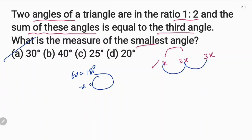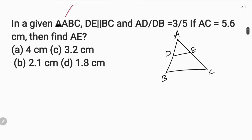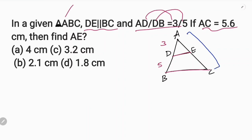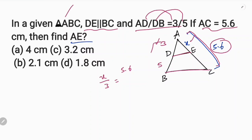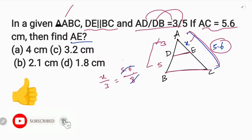Let's take this triangle. This triangle has DE parallel to BC. AD by DB equals 3 by 5. AD is 3, DB is 5, AC is 5.6. AC is the most angle of 5.6. I will take AE. Let's take a diagram. I will show AE. D will be 3. X by 3 is equal to this angle of 5.6. X is equal to 3 into 0.7, which is 2.1.